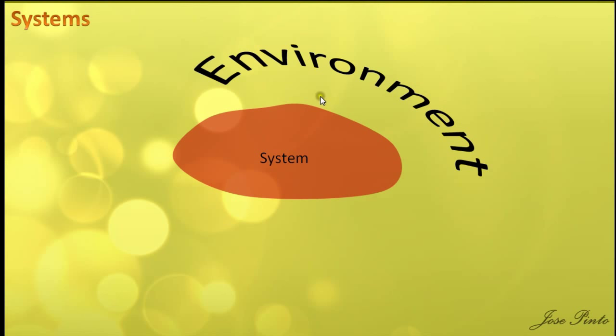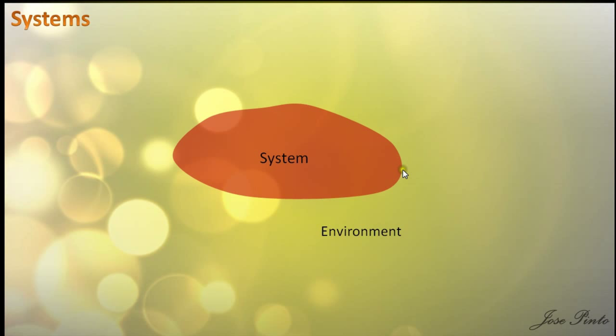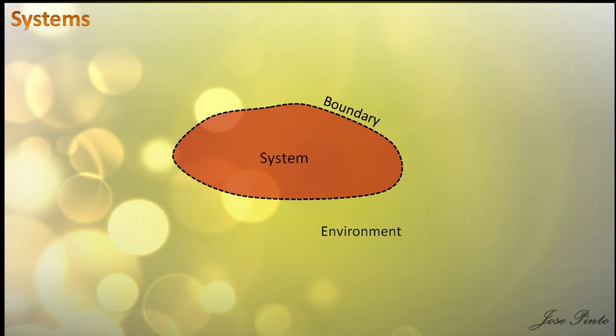A system is separated from its surroundings by a boundary, which does not have to be a real physical thing. Exchanges of heat, work, or matter between the system and the surroundings might take place across the boundary. So you can classify the system by specifying what you allow to cross the boundary.